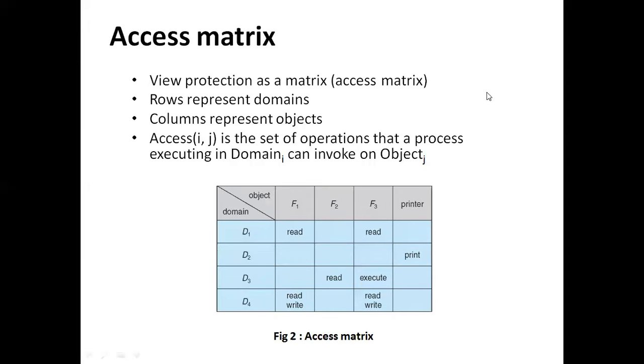We are going to discuss about access matrix. A matrix is written as elements in rows and columns. Similarly, a protection model can be represented as a matrix, and this matrix is called an access matrix. The rows in the access matrix represent domains, the columns represent objects or resources, and the entries in the matrix represent the operations that a process can perform on an object in a particular domain.